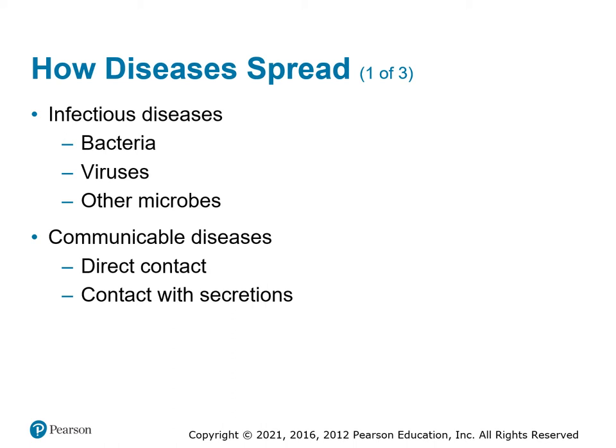How are diseases spread? Infectious diseases are spread by bacteria, viruses, other microbes like protozoas, fungi, and parasites. Other microbes may not be communicable. Communicable diseases are spread with direct contact or contact with secretions.